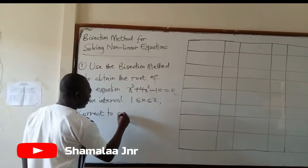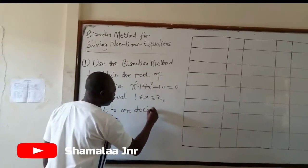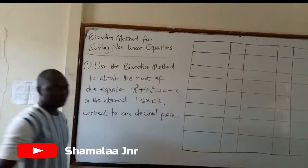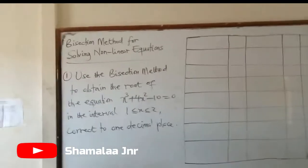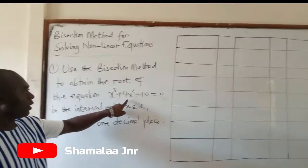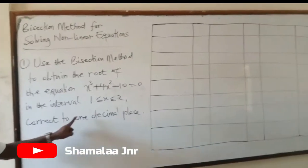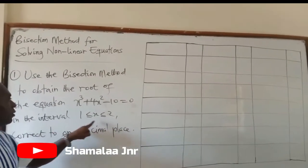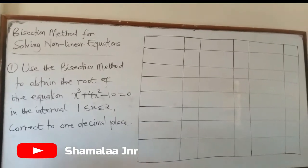It means you should correct your answer to one decimal place. So this is the question: use the bisection method to obtain the roots of the equation X³ + 4X² − 20 = 0, in the interval where X is greater than or equal to 1 but less than or equal to 2. Correct to one decimal place.